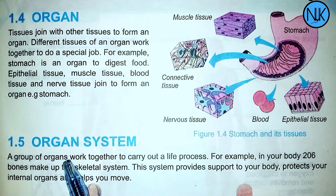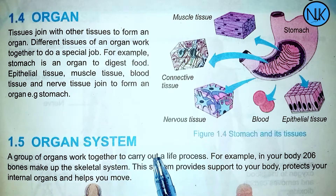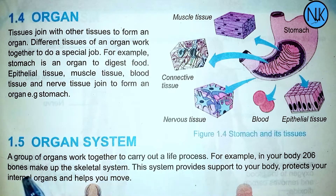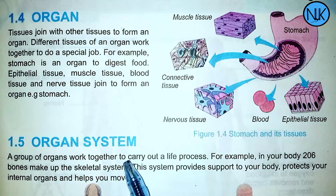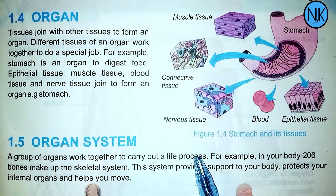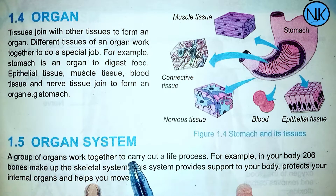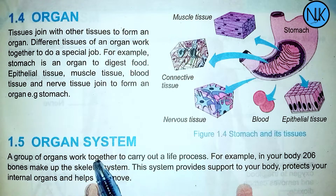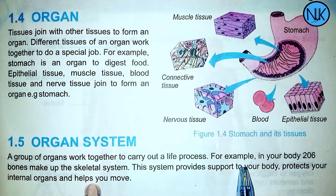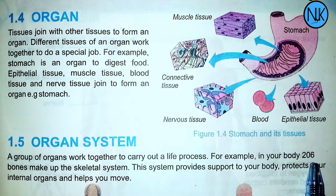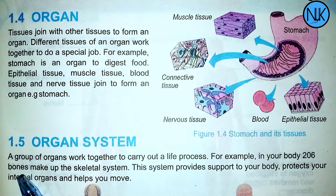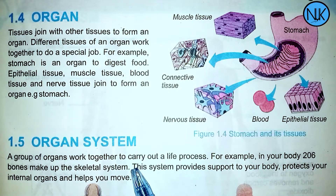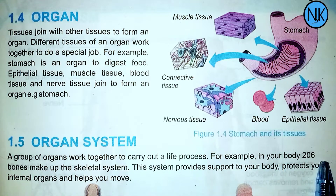A group of organs work together to carry out life processes. For example, in your body, 206 bones make up the skeletal system.